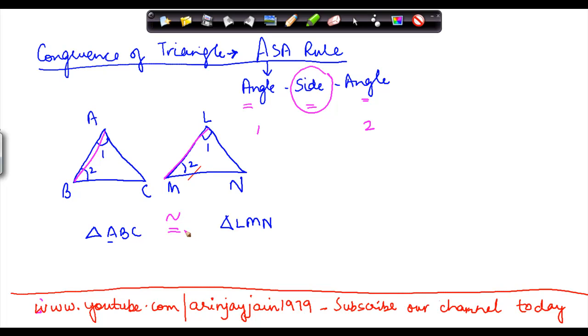So basically triangle ABC will be congruent to triangle LMN where angle 1 is equal to... let me just rewrite this. Let's say this is angle 3 and this is angle 4. Angle 1 is equal to angle 3, angle 2 is equal to angle 4, and side AB is equal to side LM.